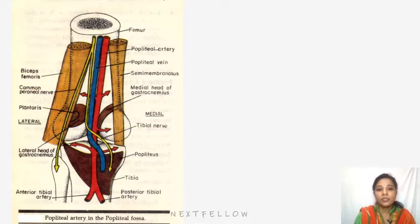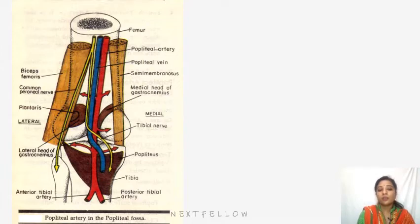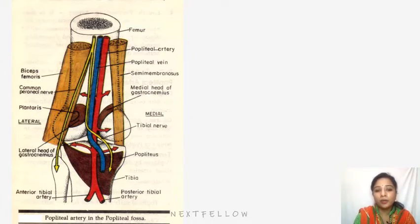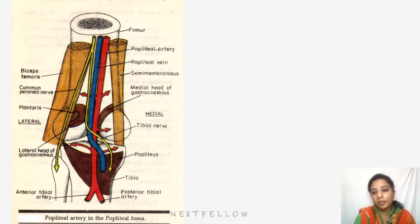It is the nerve of the anterior and lateral compartment of the leg mainly. It terminally divides into two branches called the superficial peroneal and deep peroneal nerve. The deep peroneal is for the anterior compartment and the superficial peroneal is for the lateral compartment.